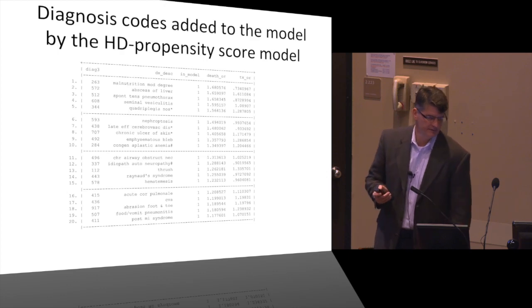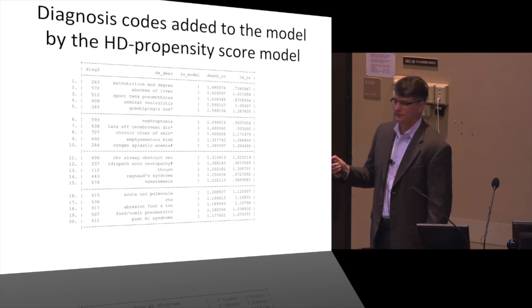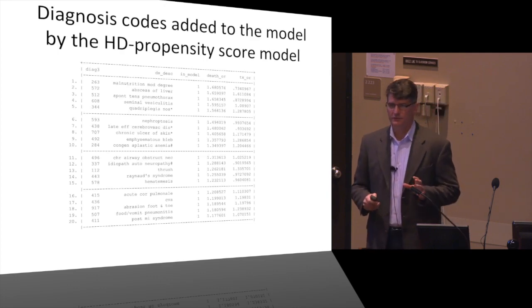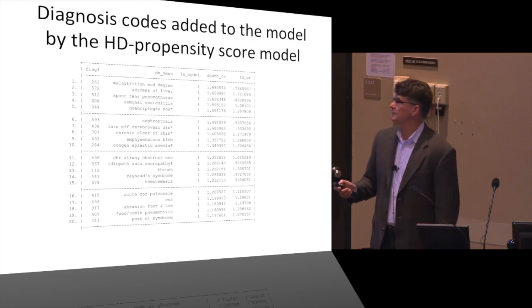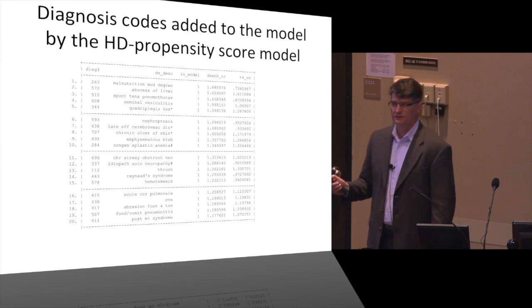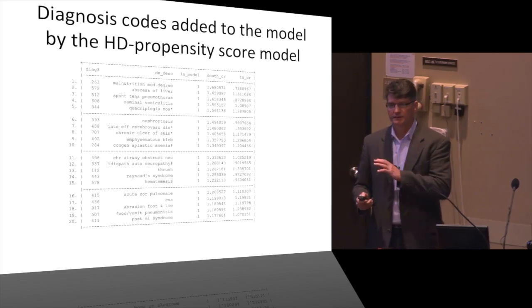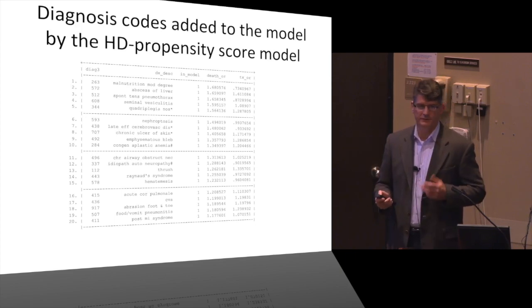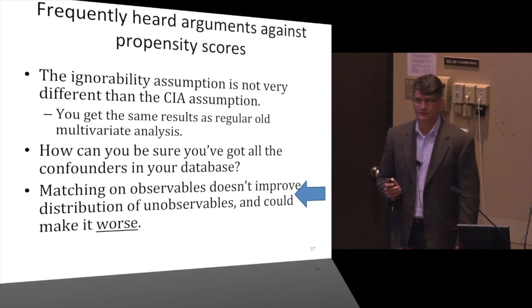From the High Dimensional Propensity Score applied to early versus late start dialysis, the model threw in codes like malnutrition — which made a lot of sense — but also thrush, which was unexpected. On better data, the model surfaced many mental health and alcohol codes that weren't originally considered, which turned out to be quite reasonable.